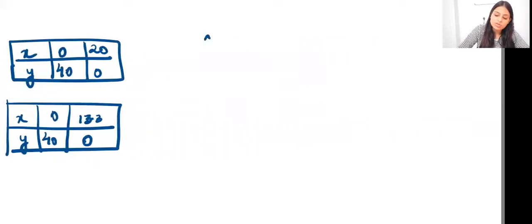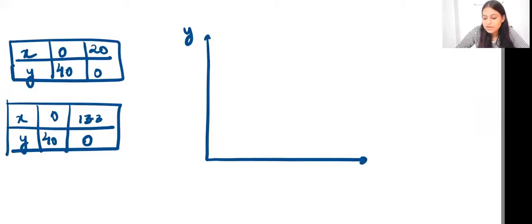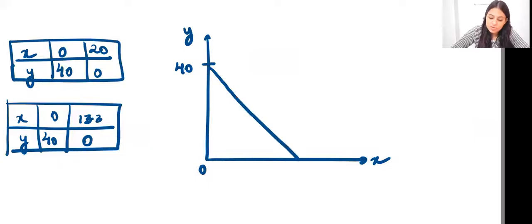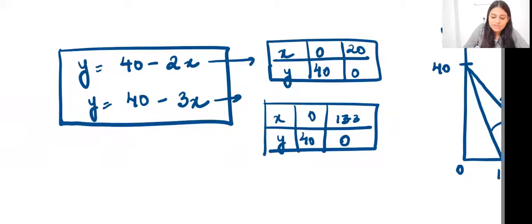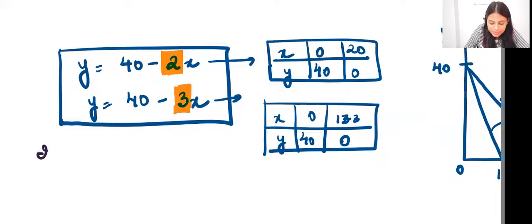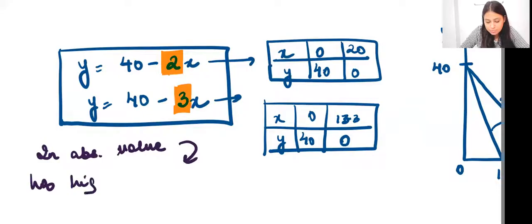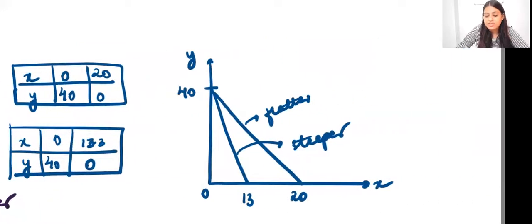Plotting these: both lines start at y = 40 when x = 0, but one reaches zero at x = 20 and the other at x = 13. So one line is flatter and the other is steeper. The slopes in absolute value are 2 and 3 respectively. The line with the higher absolute slope value becomes steeper.